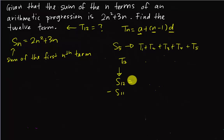For example, sum of the 12th term will be T1 + T2 + T3 + ... + T10 + T11 + T12. Then sum of the first 11 terms will be T1 + T2 + T3 + ... + T10 + T11. This is the sum of the 11th term.